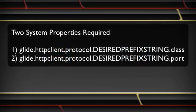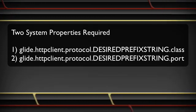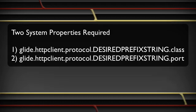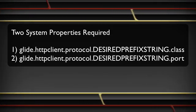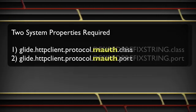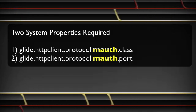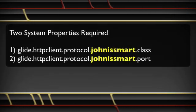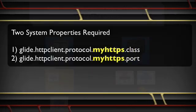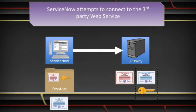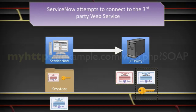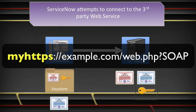Additionally, two system properties must be created on the ServiceNow instance to define a Mutual Authentication protocol. One property should specify which port the web service will use to handle Mutual Authentication requests. Part of the property name will include a custom protocol identifier — you can name it anything you want. Once set up, ServiceNow can initiate a web service call to the third-party leveraging Mutual Authentication by using the protocol class prefix specified in the system property.